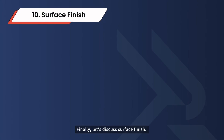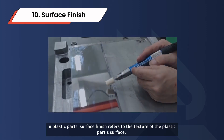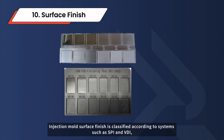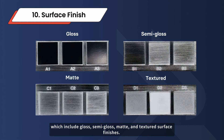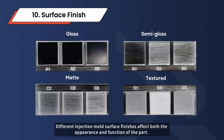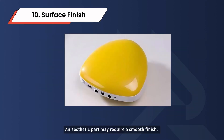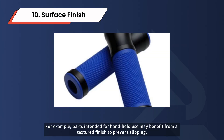Finally, let's discuss surface finish. In plastic parts, surface finish refers to the texture of the plastic part's surface. Achieving different textures involves adding a surface finish to the injection mold. Injection mold surface finish is classified according to systems such as SPI and VDI, which include gloss, semi-gloss, matte, and textured surface finishes. Different surface finishes affect both the appearance and function of the part. An aesthetic part may require a smooth finish, while a textured finish may provide a better grip. For example, parts intended for handheld use may benefit from a textured finish to prevent slipping.